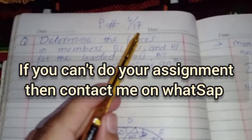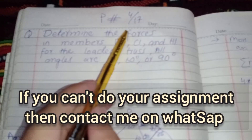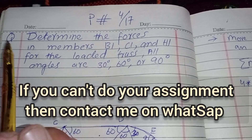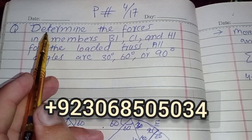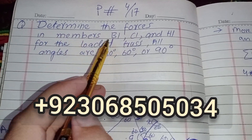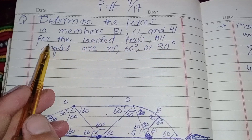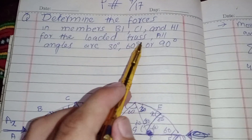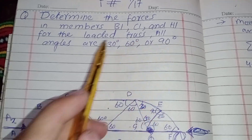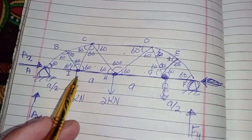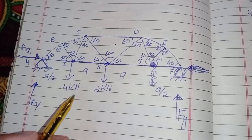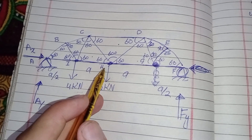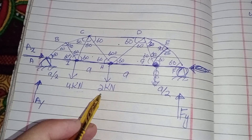Hello dear students, this is Problem 17, Chapter 4 of Engineering Mechanics Statics, 9th edition. In this problem, determine the force in members BI, CI, and HI for the loaded truss. All angles are 30, 60, and 90 degrees. The truss is loaded at point I with 4 kilonewtons and at point H with 2 kilonewtons.